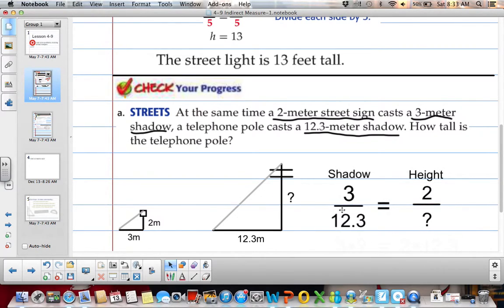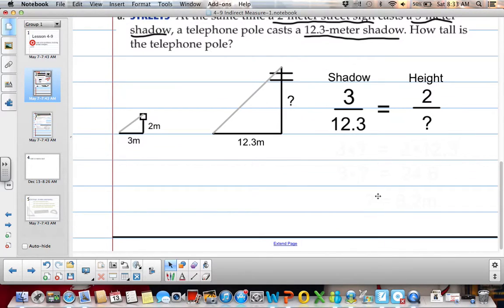So you should have set up this proportion: 3 over 12.3 equals 2 over question mark, or you could have put an x or any variable. So we have 3 times our question mark equals 2 times 12.3, and then we solve and we get 8.2 meters.